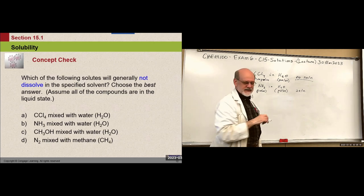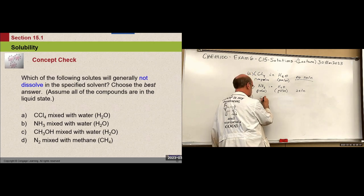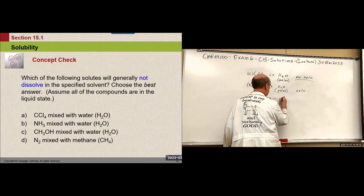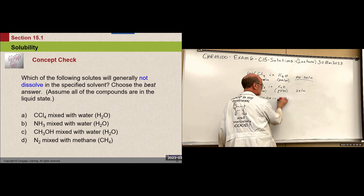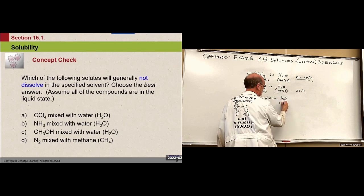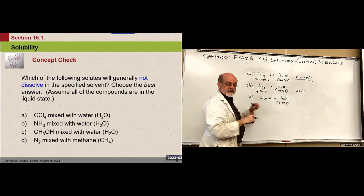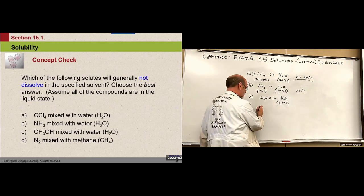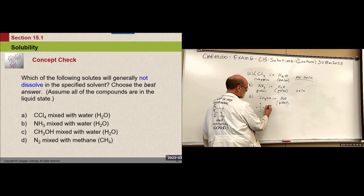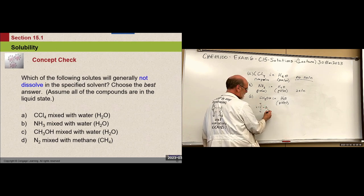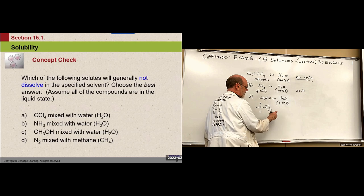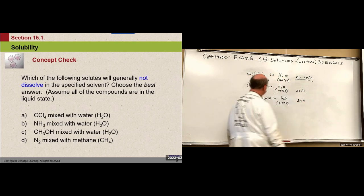How about CH₃OH in water? This one is like ethanol — you have carbon with hydrogens, then an oxygen and a hydrogen. There is a polar bond at that end, so this forms a solution.